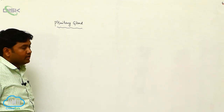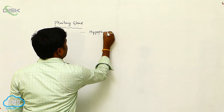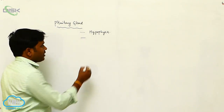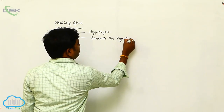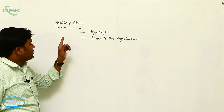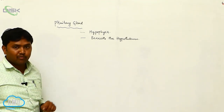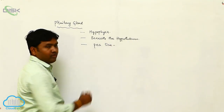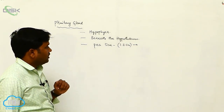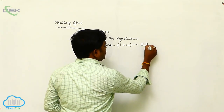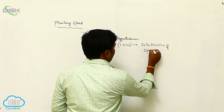Endocrine system - the first gland is the pituitary gland, also called the hypophysis. It is located beneath the hypothalamus. Its size is approximately 1.3 cm, and it lies in the sella turcica of the sphenoid bone.